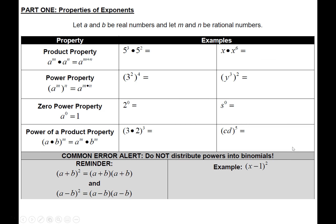So first, let's get into just what are the rules or the properties of exponents. The first property we're going to talk about is called the product property. What it says is if you have two bases that are the same base — so in the example it's five and five — you can take the two exponents, and if those two bases are being multiplied together, you can add those exponents.